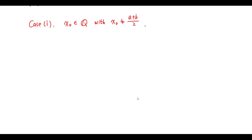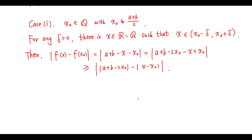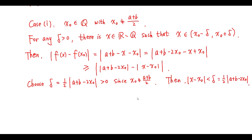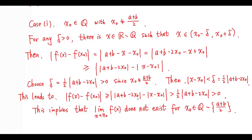Case 1: x0 is a rational number and x0 is not equal to (a+b)/2. For any positive real number delta, there is an irrational number x such that x is in this open interval. We have this inequality. Choose delta equal to this value, which is greater than 0. Then, because x is in this open interval, we have this inequality. So the absolute value of f(x) minus f(x0) is greater than this positive number. This implies this limit does not exist for this case.